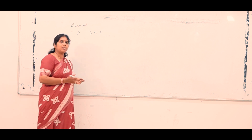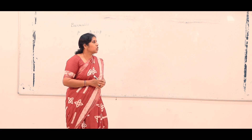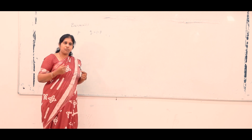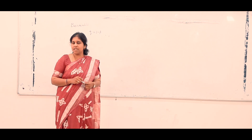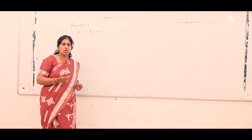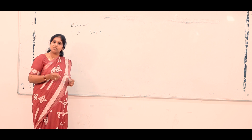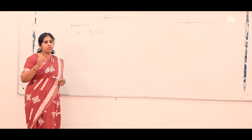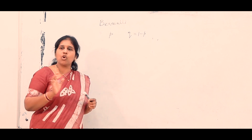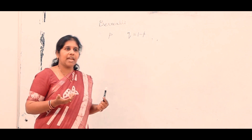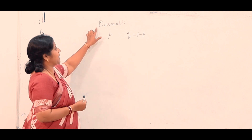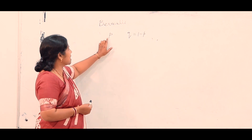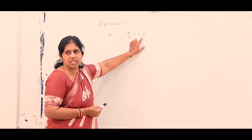Examples of a Bernoulli experiment: tossing a coin results in two outcomes — getting a head is success and getting a tail is failure. Another example is a student's result — either pass or fail. Also, rolling a die: if I want the number four, getting a four is success and not getting four is failure. Any experiment which results in two possible outcomes, either success or failure, is a Bernoulli experiment.